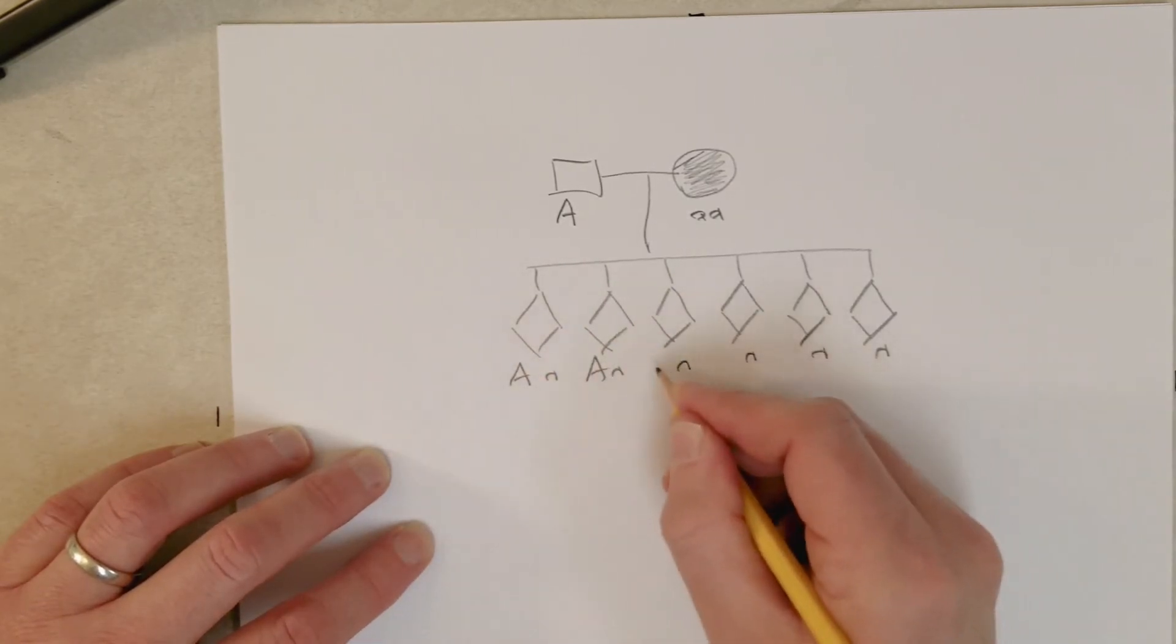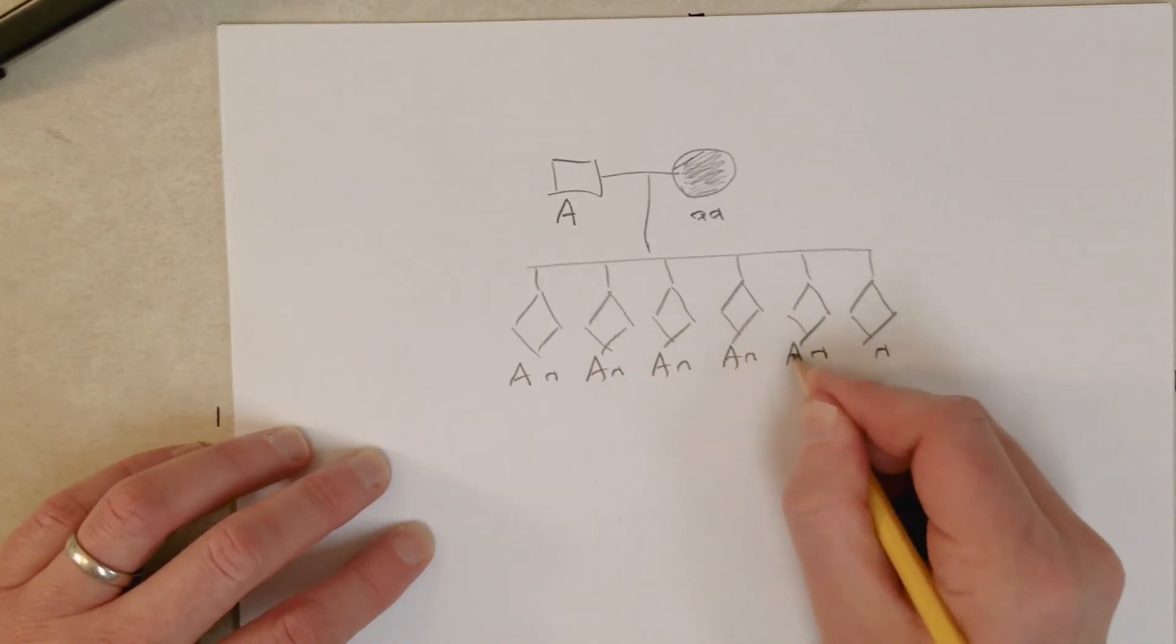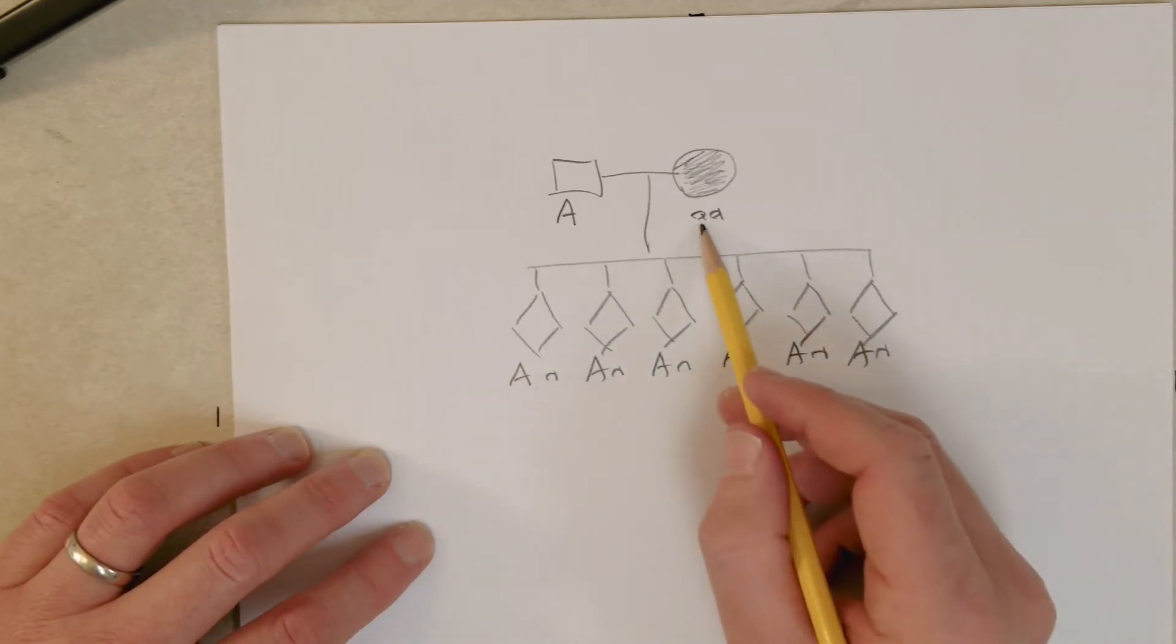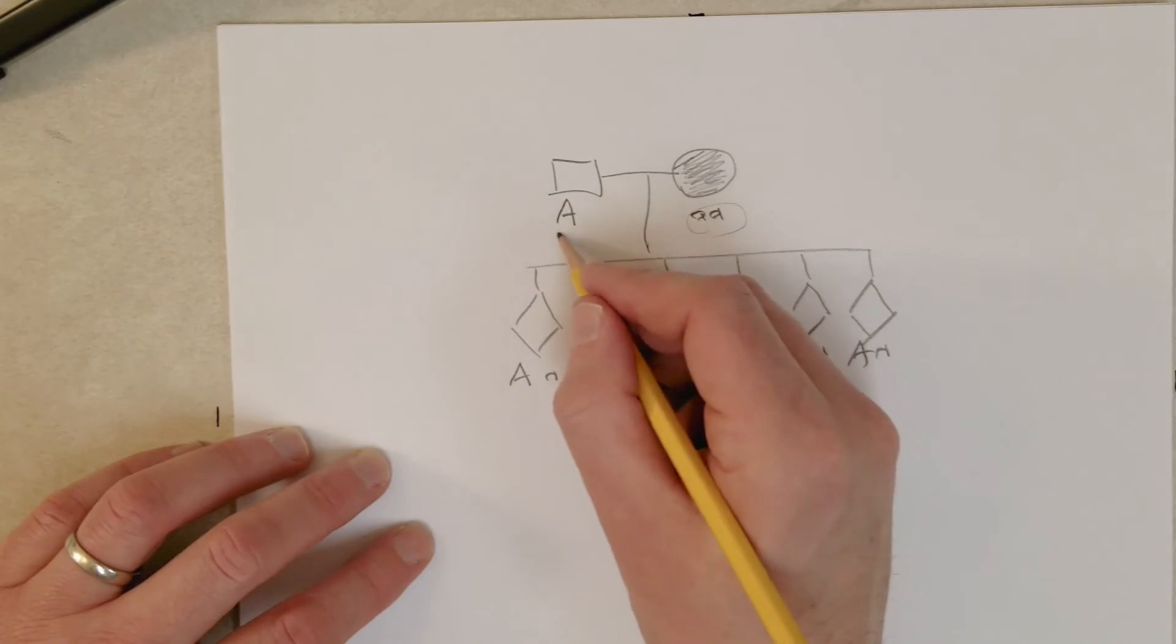But they all have to get a big A too, because the phenotypes are all normal. So we can conclusively determine that these are the genotypes of all of the children. This is the genotype of the mom. Now the dad here...